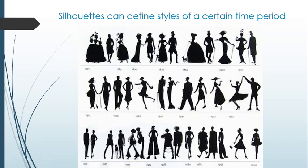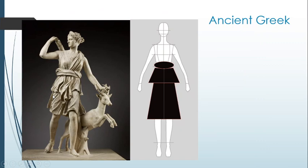Silhouettes themselves can define a certain time period of dress, as we can see in this timeline of silhouettes throughout the ages. We can see how silhouettes are changing from decade to decade and can give wearers different looks.